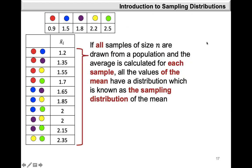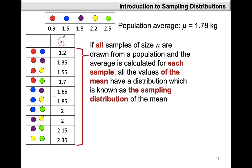Considering our population of five piglets, we were able to take samples of size two at a time and calculate our sample mean x-bar. In this case we have 10 estimates for our population mean mu, and we can see that x-bar is a random variable. All the values of the mean have a distribution that we refer to as the sampling distribution of the mean.